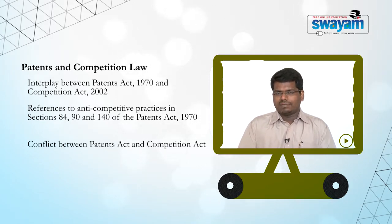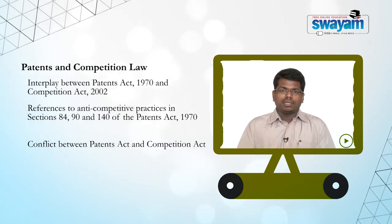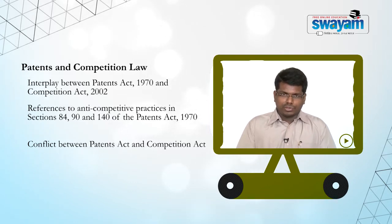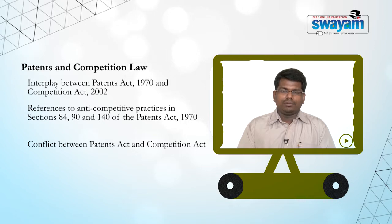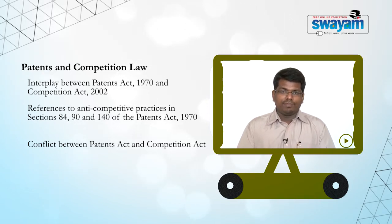It must be understood that the Controller of Patents is not a market regulator. His role is limited to ensuring that the patentee adheres to the obligations imposed under the Patents Act. It is true that under section 83, one obligation is to prevent any kind of abuse of the patent right granted to a patentee. However, the mechanism for that is not compulsory licensing, because all that a compulsory license does is create an interest in favour of a person interested.